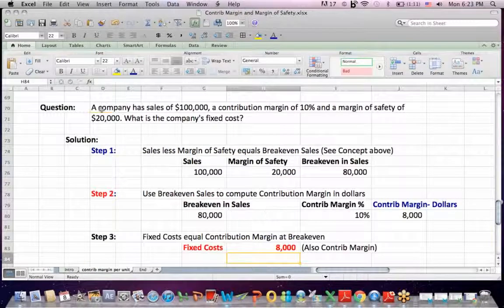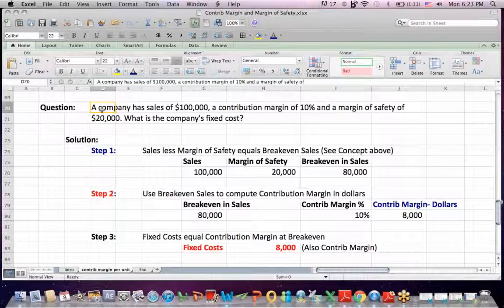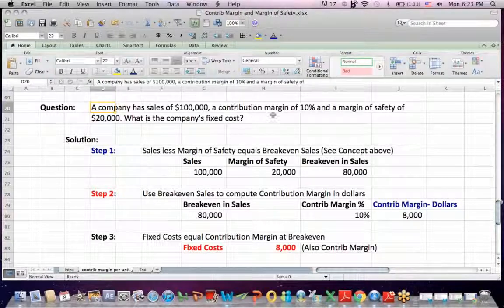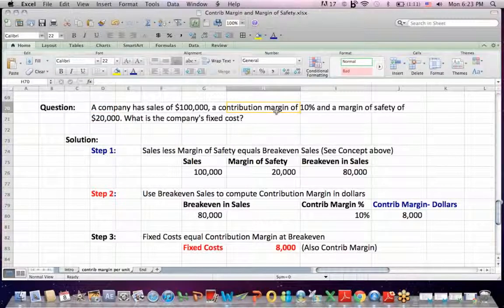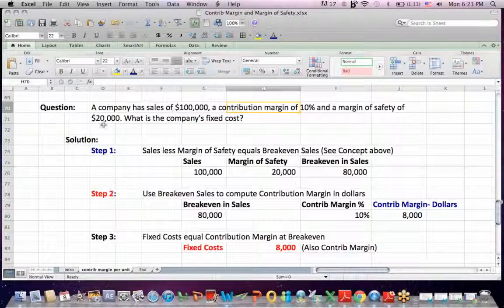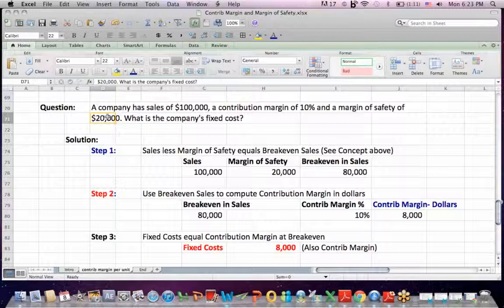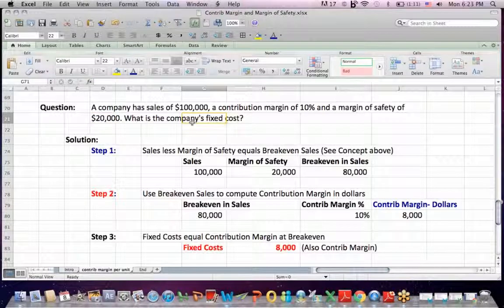So now I amend the question again. A company has sales of 100,000. It has a contribution margin, again, sales minus variable costs, of 10% of sales, and a margin of safety of 20,000 in dollars. What's the company's fixed costs?